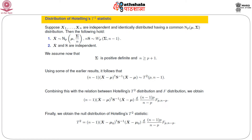Let us see the connection between the Hotelling T-square distribution and the Hotelling T-square statistic. The Hotelling T-square distribution has several components: X-bar, S, S-inverse, and a quadratic form—a quadratic form involving a multivariate normal variable and a Wishart matrix. When X₁ through Xₙ are IID, independently and identically distributed, having a common multivariate normal distribution, the following holds.